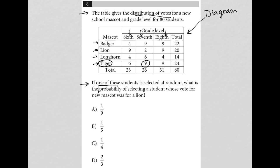So anytime I see the word probability on this test I'm thinking fraction where the numerator is what you want. In this case what we want is voting for lion.